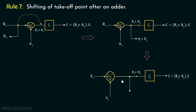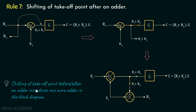Consider this block diagram with the takeoff point after the adder. The output is r1 plus r2, and our target is to make it equal to r1. For that we need one more adder at this point, and we add signal r2 with a negative polarity to subtract r2. Now the output of this takeoff point is equal to r1. We can say that shifting a takeoff point before or after an adder introduces one more adder in the block diagram, because we need to maintain the output of the takeoff point.